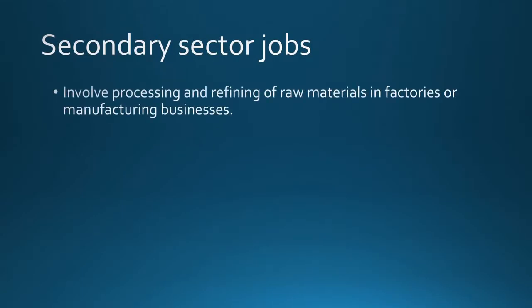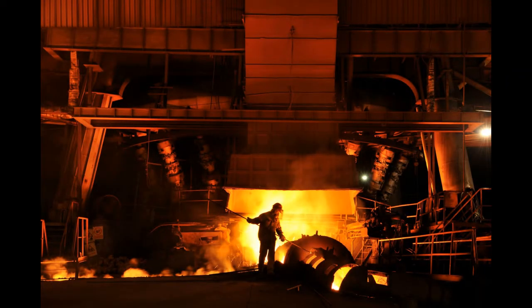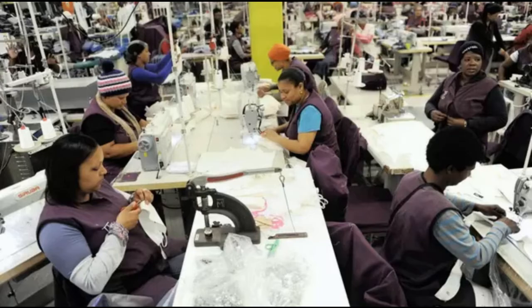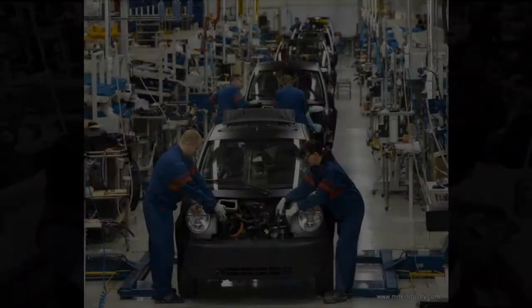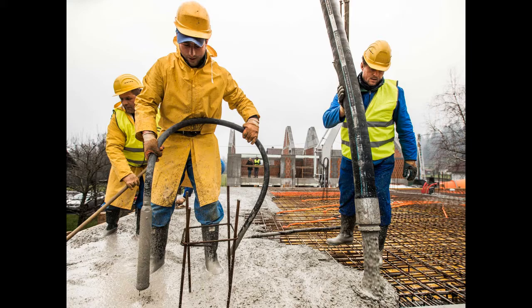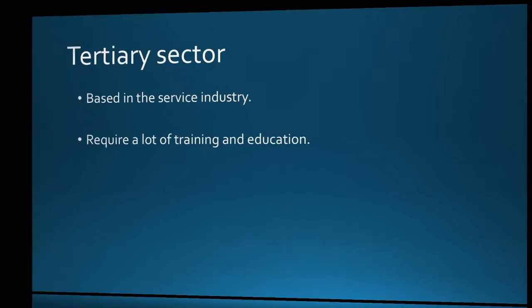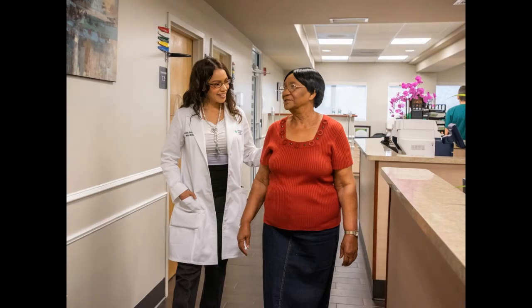Secondary sector jobs involve the processing of raw materials and creating new and refined products through industry and manufacturing. These jobs require more skills and training, such as how to use heavy machinery in factories, and as a result pay considerably more than primary sector jobs. Examples include builders, factory workers, and clothing manufacturers. Jobs in the tertiary sector are based in the service industry. These jobs often require years of training and education and are generally the highest paying jobs available. Employment in the tertiary sector includes lawyers, doctors, and teachers.